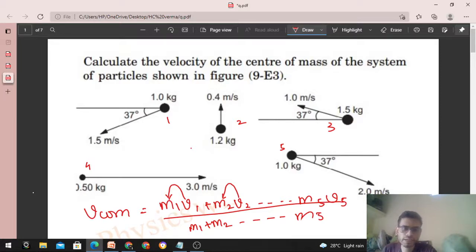So everything is given. First particle's mass is 1 kg and its velocity is also given, which is 1.5 meters per second in the downward direction at an angle of 37 degrees with the horizontal. So let's write it in vector form, that will be easier. Upward direction will be j cap and this direction will be i cap, right?